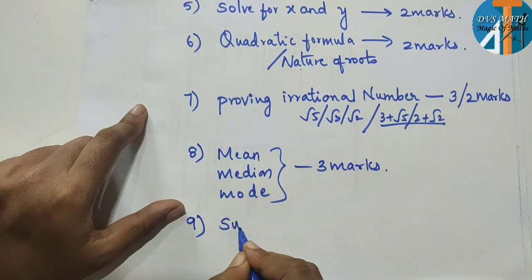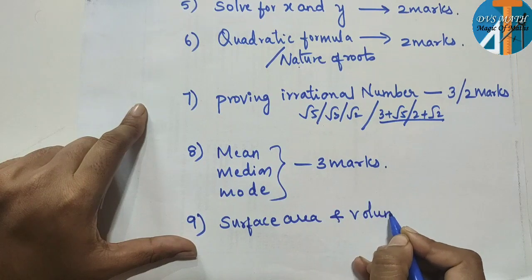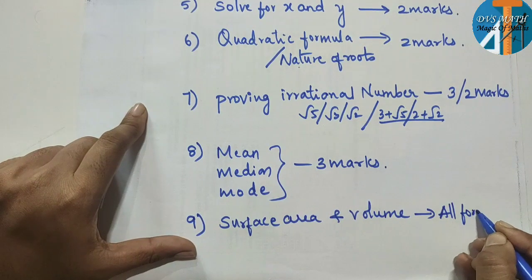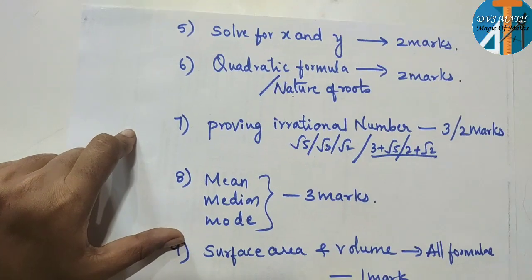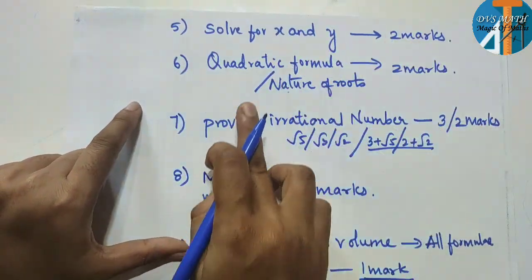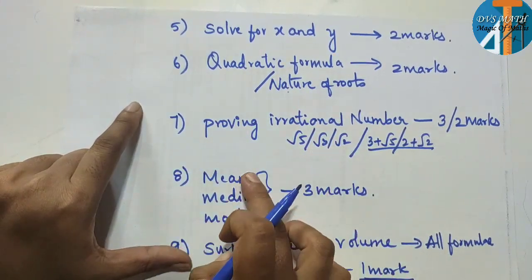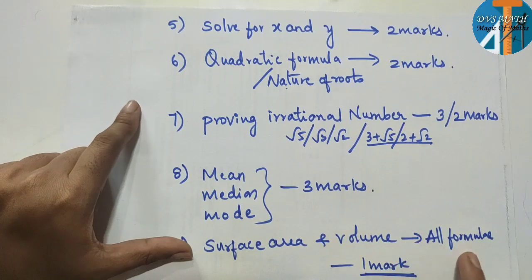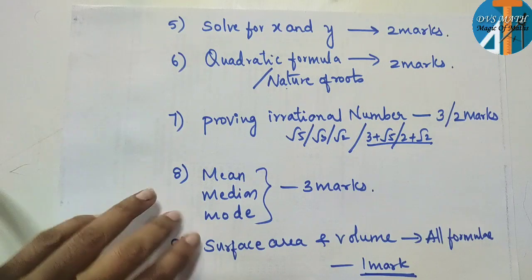Next, question number 9: surface area and volume. Go through all the formulas for surface area and volume and practice them. All formulas — practice them and you will definitely get one mark. So: solve for x and y, quadratic formula, nature of roots, proving irrational number, mean median mode, and surface area volume formulas.